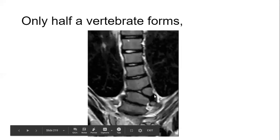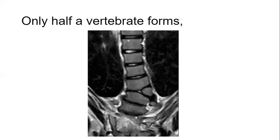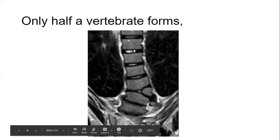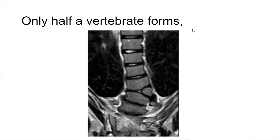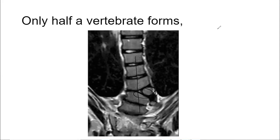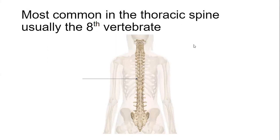Looking at this diagram, the hemivertebrae is here in the low back, next to the pelvis. These vertebrae should actually be lined up straight, but you can see how the hemivertebrae is pushing things off to the side. The spine does come back and straighten out somewhat, but sometimes the deviation is enough to cause scoliosis — you can see some curvature going one way and then compensating back the other way.